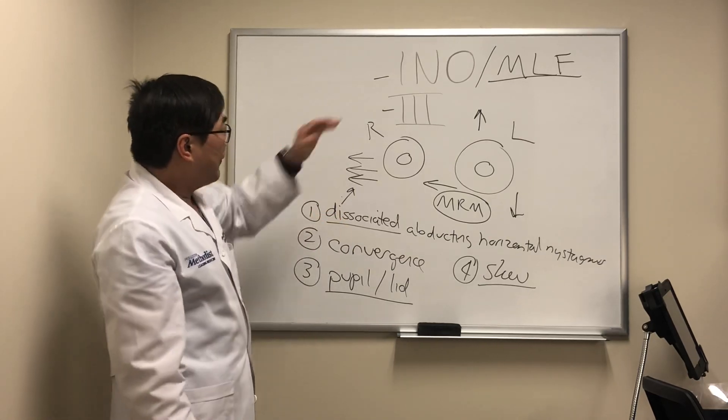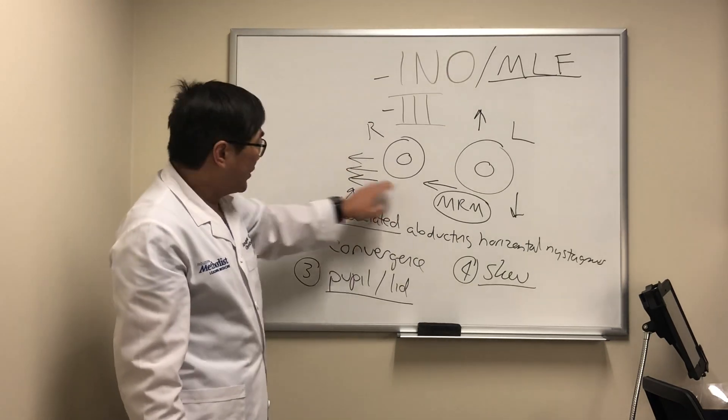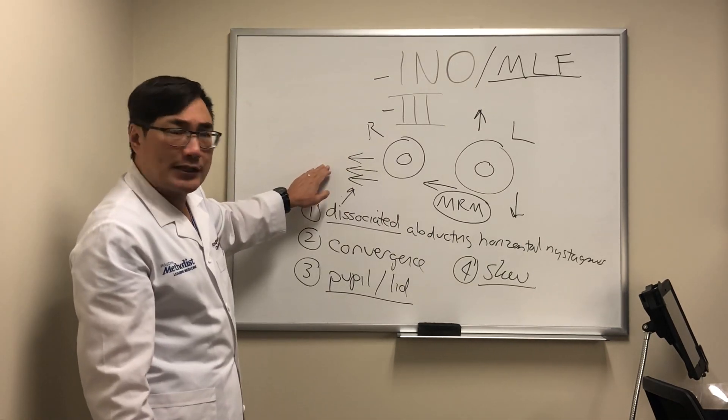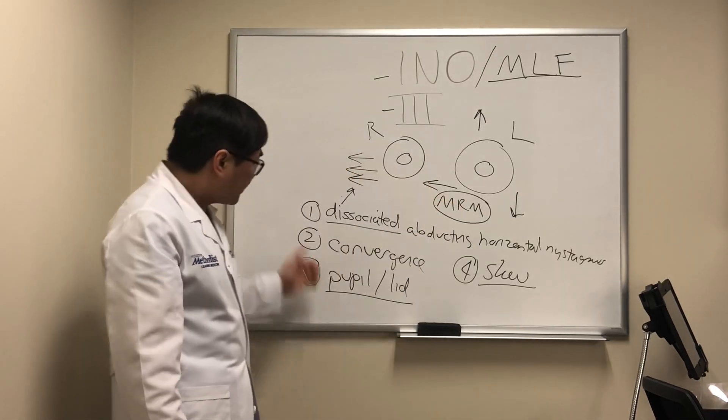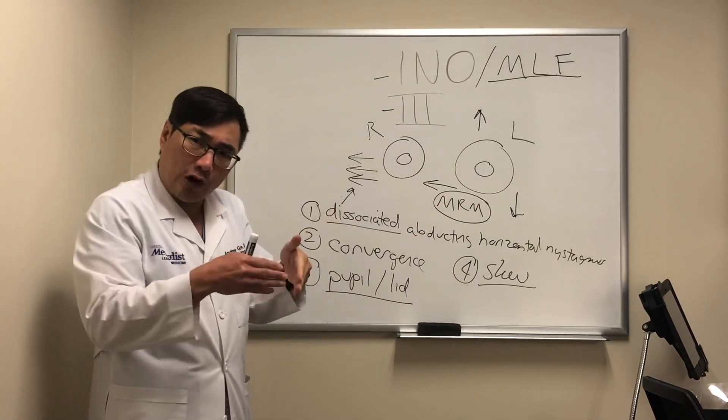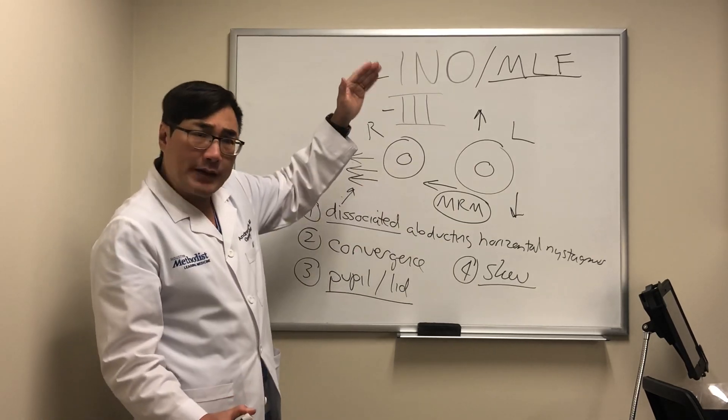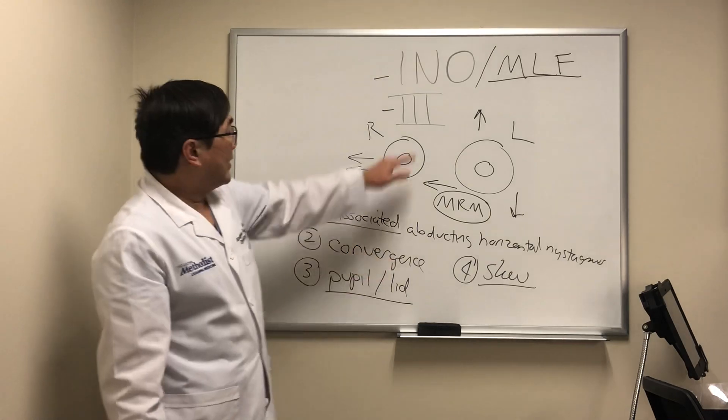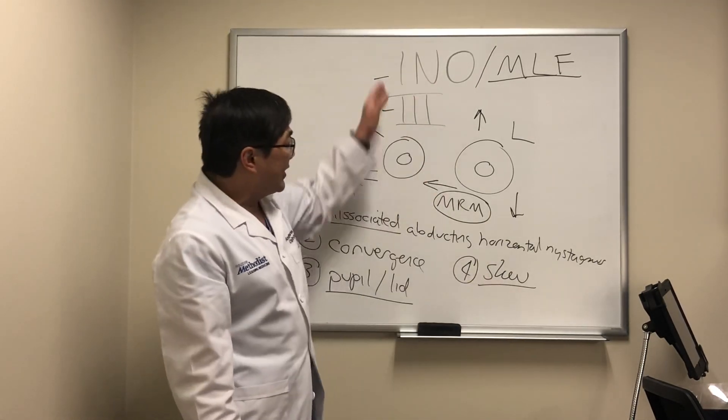So the key features in differentiating INO from third nerve palsy: an adduction deficit with an abducting dissociated horizontal nystagmus on gaze away from the affected side. Convergence effort might be able to overcome the deficit if the lesion's in the pons as opposed to the midbrain. The pupil and the lid are the things we're going to be using to help differentiate from third. But a vertical deviation could be in either.